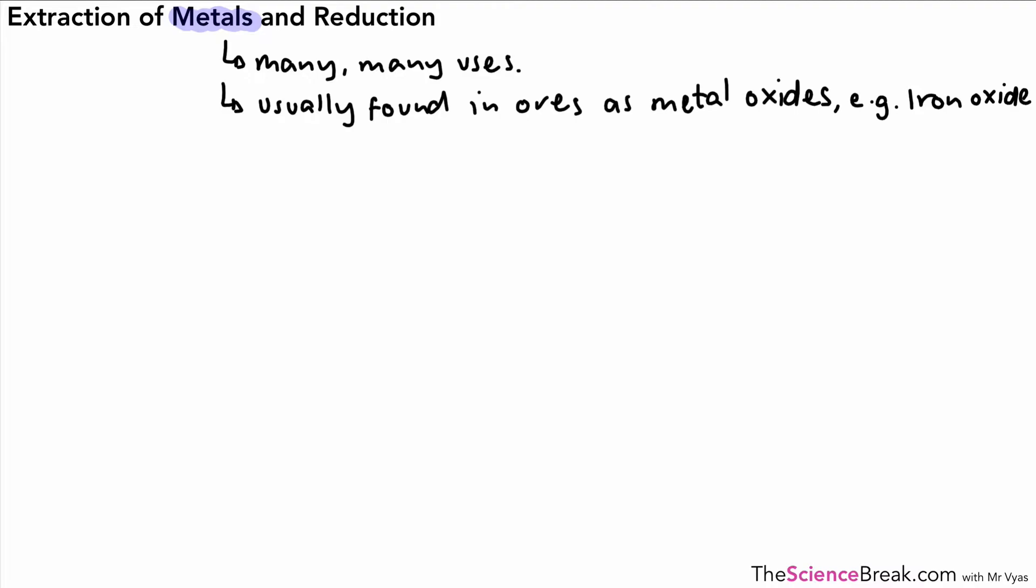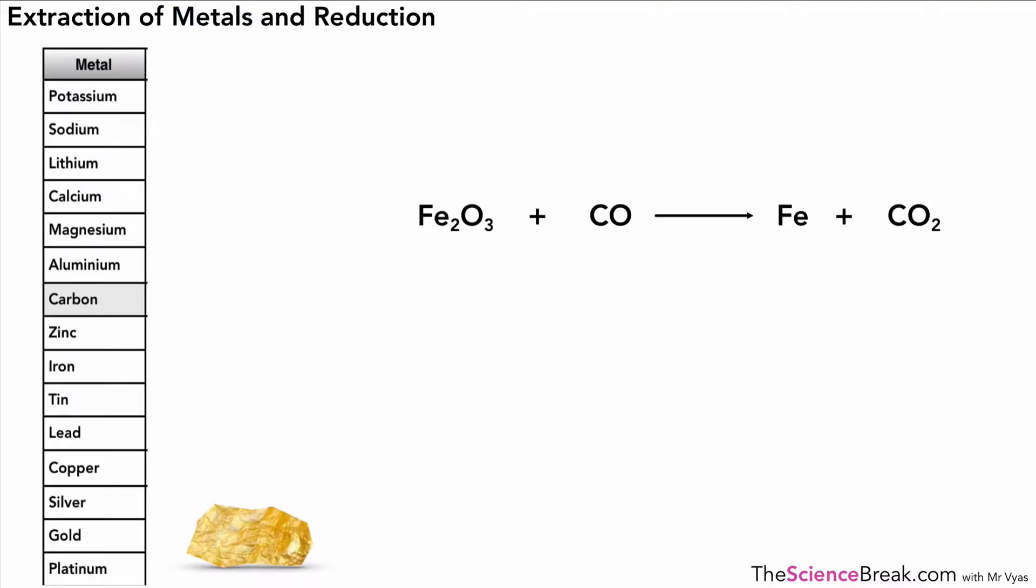So, let's take a look at a bit more detail in terms of the iron oxide. Here we've got our reactivity series on the left, which we've used in a previous video. We've got gold at the bottom and as we know, that's very unreactive and we call that native, or we say it's found native. In other words, there's no process needed to extract it. But here we have iron oxide.